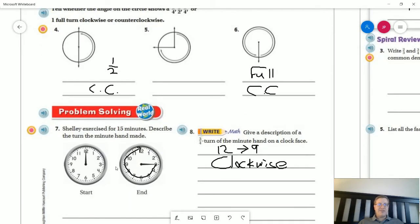I explained this as part of this. So give a description for number eight of a three quarter turn of the minute hand on the clock face. So we could say that we are going from 12 to nine, or if I were to start with this particular hand, I could start at three and go all the way around to 12, and that would be a three quarter turn clockwise.